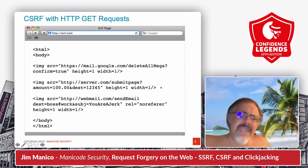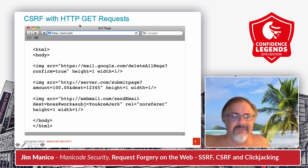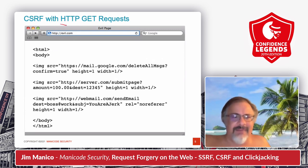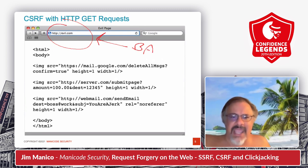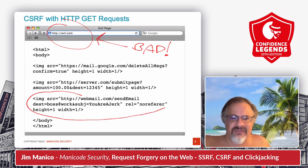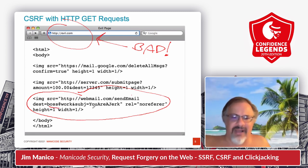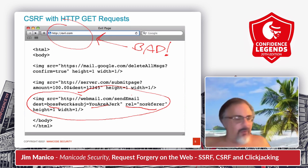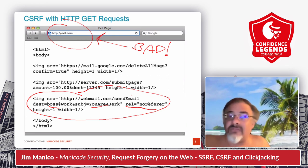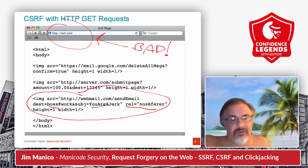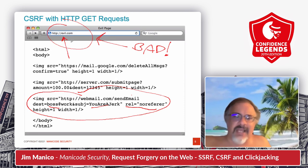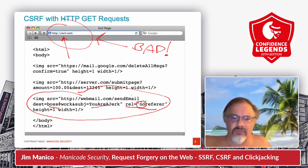Let's look at this last example. Imagine there's a vulnerability in this webmail system. Note the site I'm on — I'm on an evil website, controlled by an attacker. This code makes a request to some webmail site and it forces me to send email. The destination is my boss; I'm going to tell the boss they're a jerk. And I'm using the rel='no referrer' attribute so when I force a victim to make a request to webmail, it's not going to leak the referrer — which would be evil.com. So that's forged requests on the web.